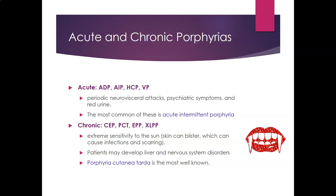The acute porphyrias — ADP, AIP, HCP, and VP — present with periodic neurovisceral attacks, psychiatric symptoms, and red urine. The most common is acute intermittent porphyria. The chronic porphyrias — CEP, PCT, EPP, and XLPP — show extreme sensitivity to sunlight, which can cause blistering, infections, and scarring. Patients may also develop liver and nervous system disorders; porphyria cutanea tarda is the most well-known chronic form.